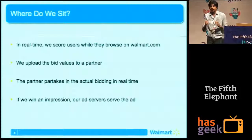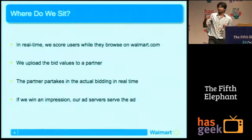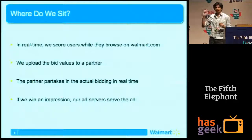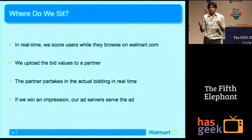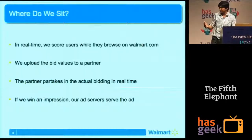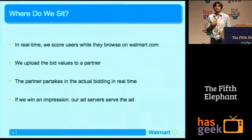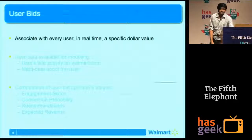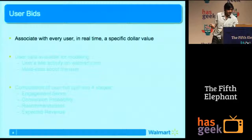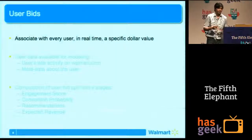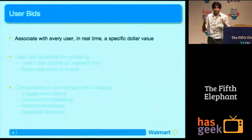So where do we sit? As a user is browsing on Walmart.com, we continuously keep scoring the user and compute bid values — how much we are ready to bid. But we do not sit on the auction house ourselves. We apply this to a partner, and the partner does the bidding for us. The reason is it requires a huge engineering effort to set up these quick time-response constraints: you have to reply within 10 milliseconds and there are billions of auctions going on. So we just score the users, compute the bid values, and give them to a partner. Real time is important because we found in the market that you have to target users within minutes.